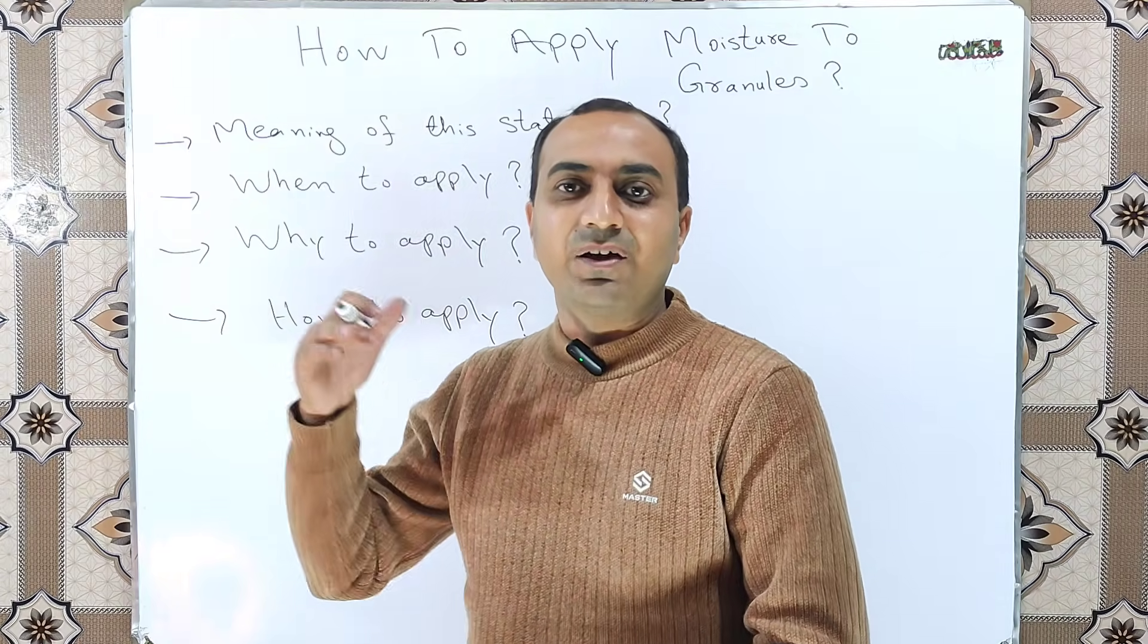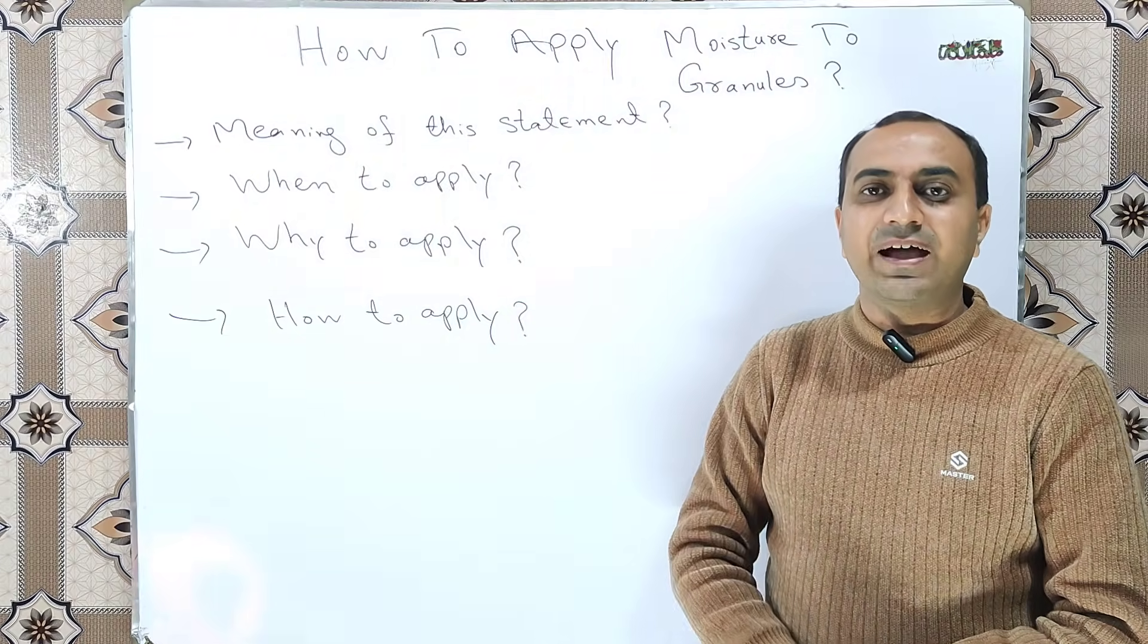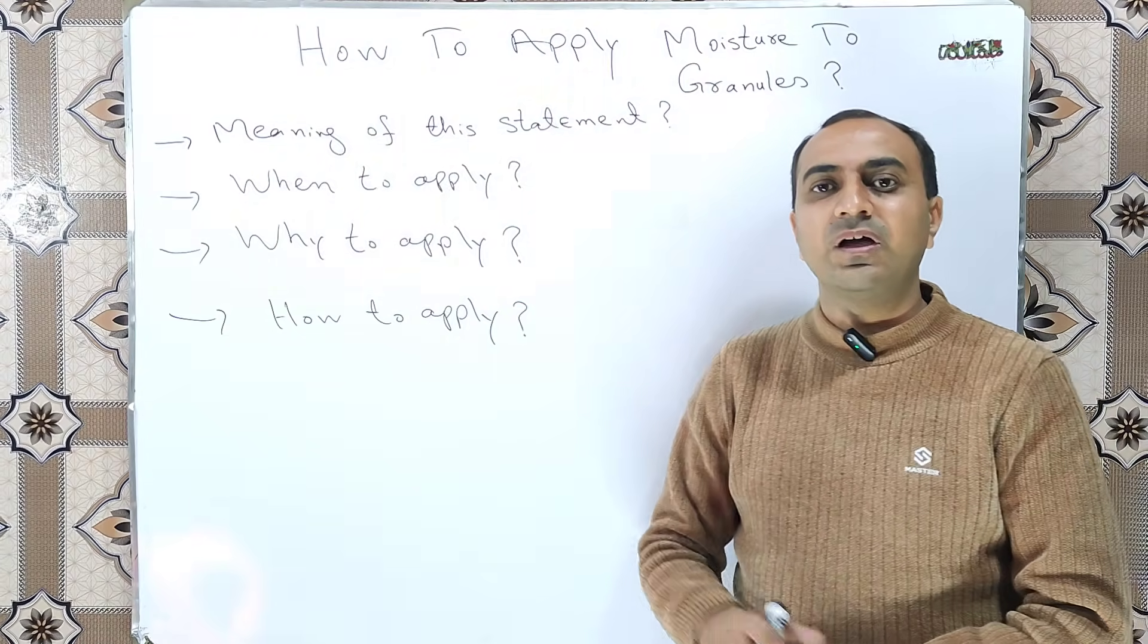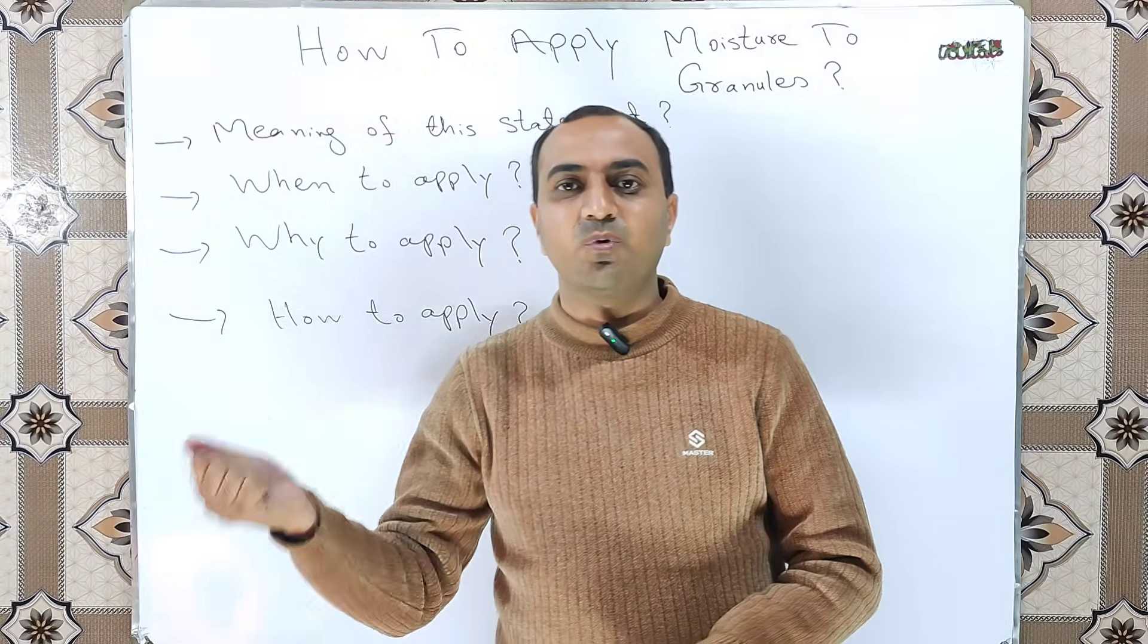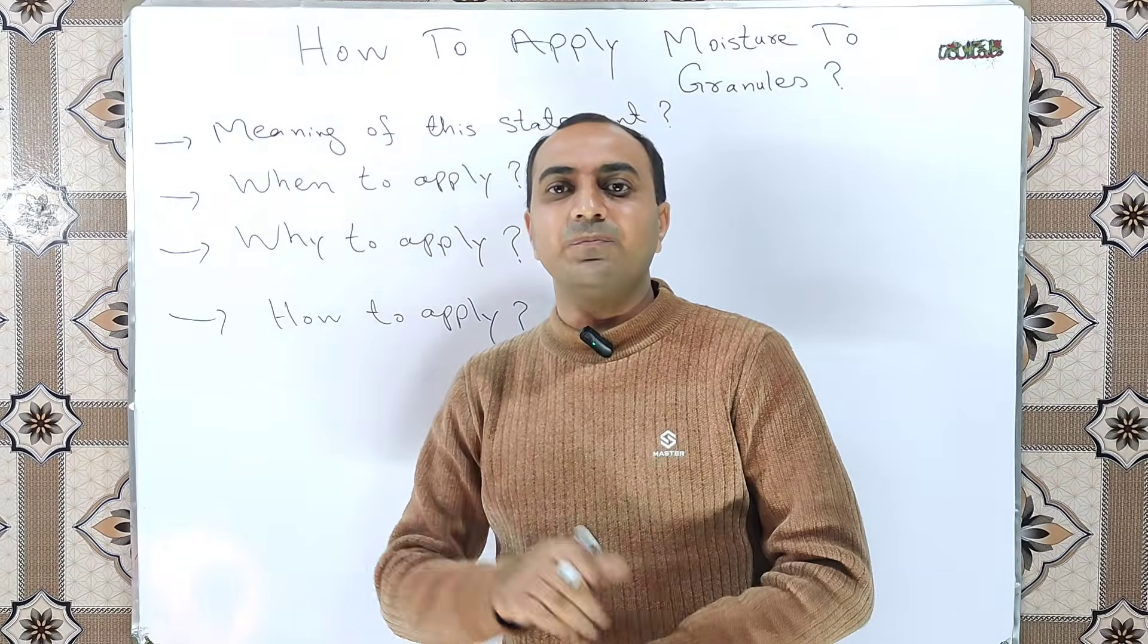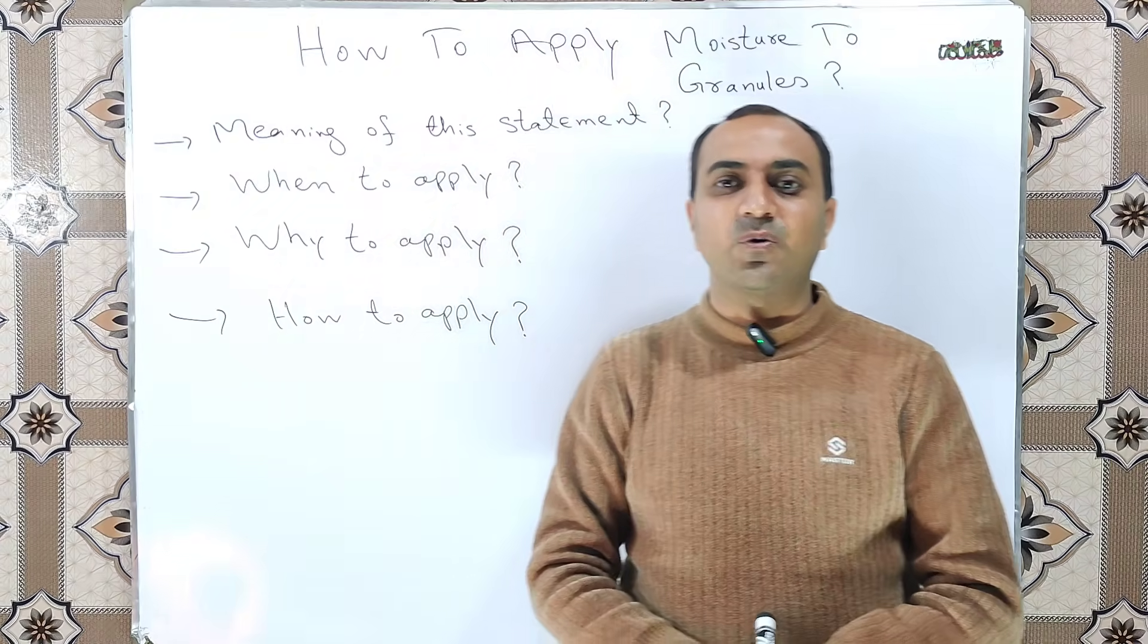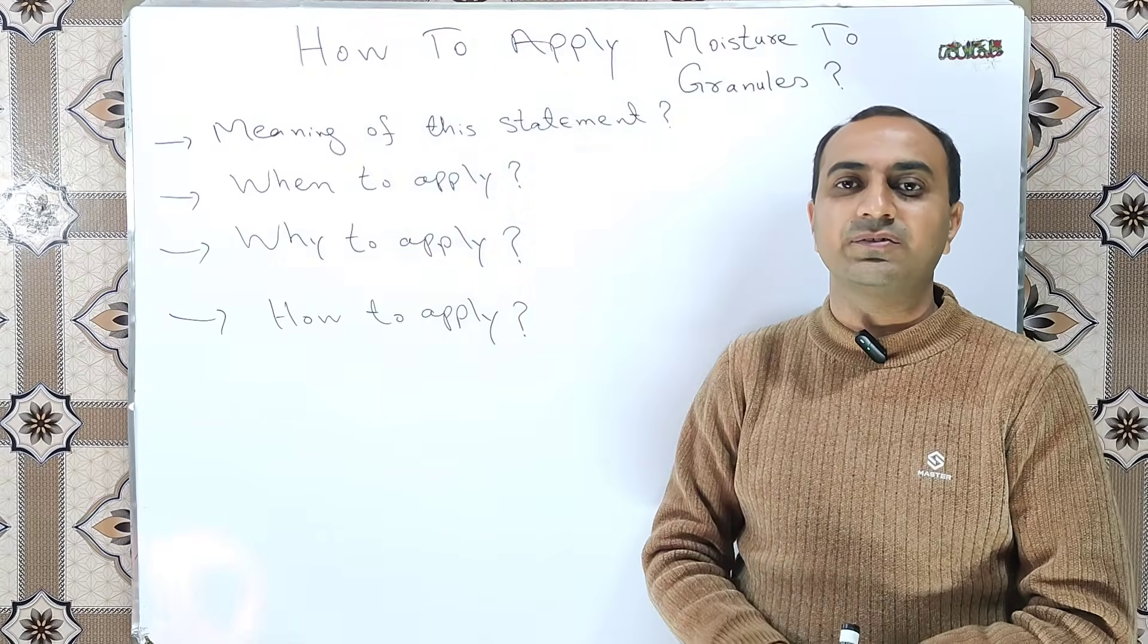One easy and conventional method to check the quantity of solvent, either it is sufficient or not, is that after applying the moisture, we take some quantity of the granules in our hand and if our lumps type material is formulated, then it is considered that the solvent quantity is okay.